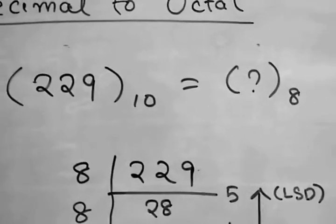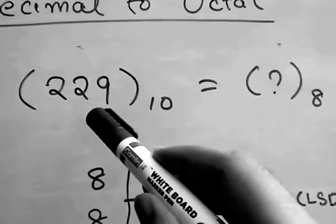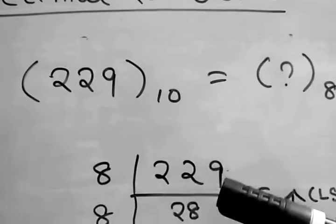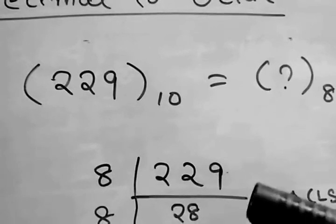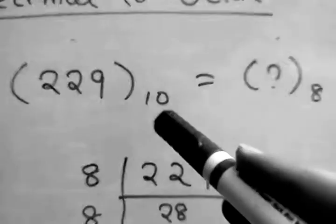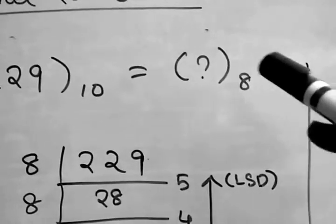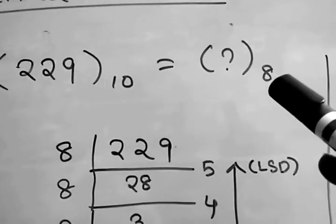As we know, while we were converting a decimal number to binary, we were dividing the decimal number repeatedly by 2 because we were converting to binary, so we were using the base of binary, that is 2, for division. Now as we are converting to octal, we will use the base of octal, that is 8, for the repeated division.